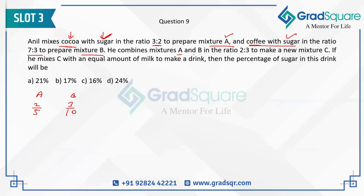He combines mixture A and B in the ratio of 2:3 — taking two parts of A and three parts of B — in order to form mixture C. To find the sugar strength in C, I know the strength of sugar in the first mixture, the strength of sugar in the second, and the ratio in which they are getting mixed.